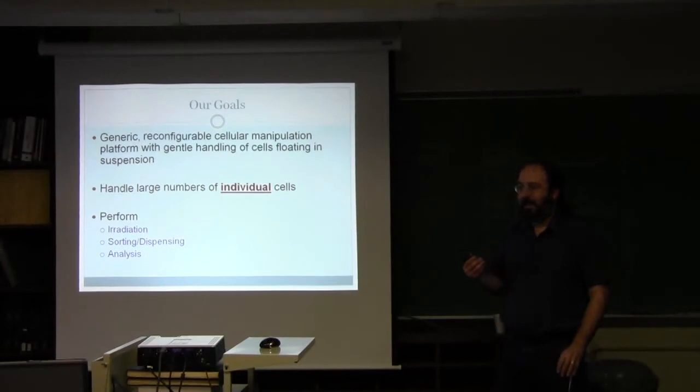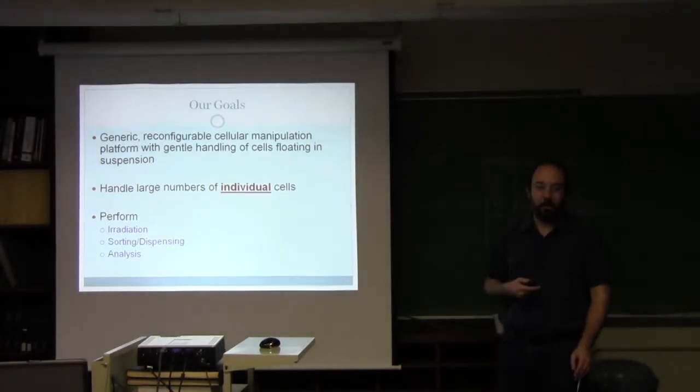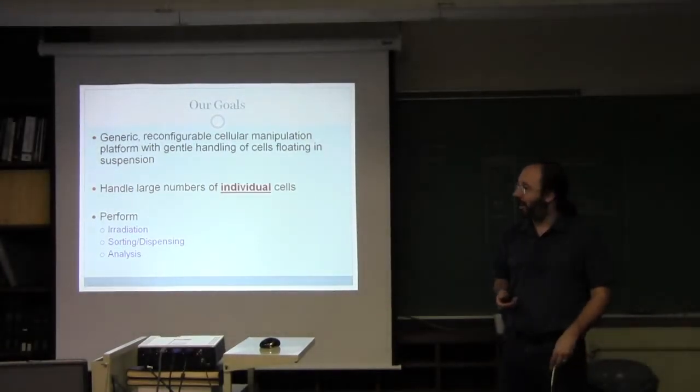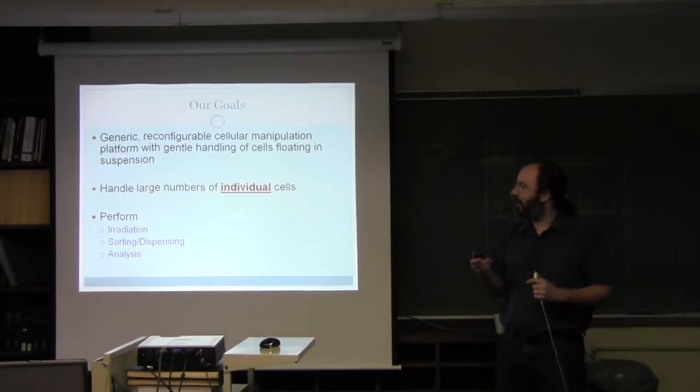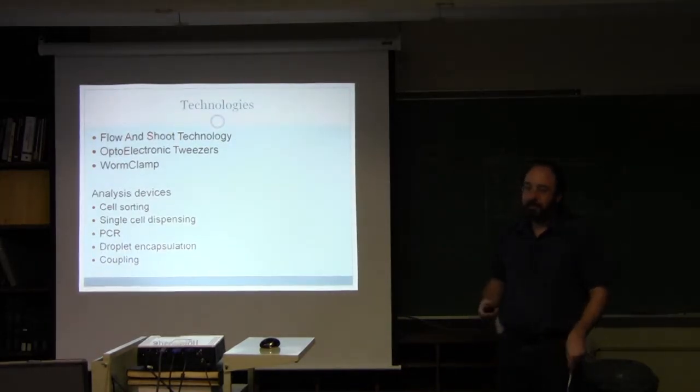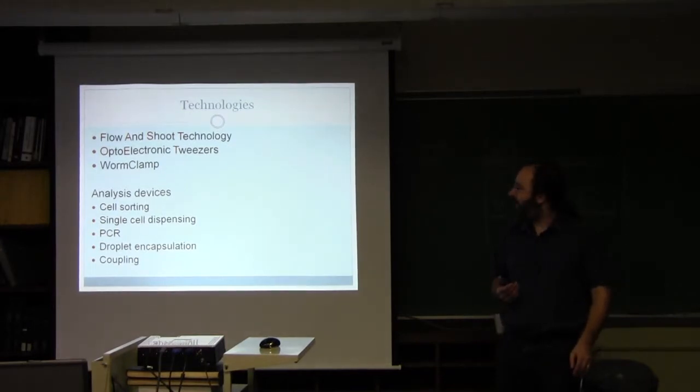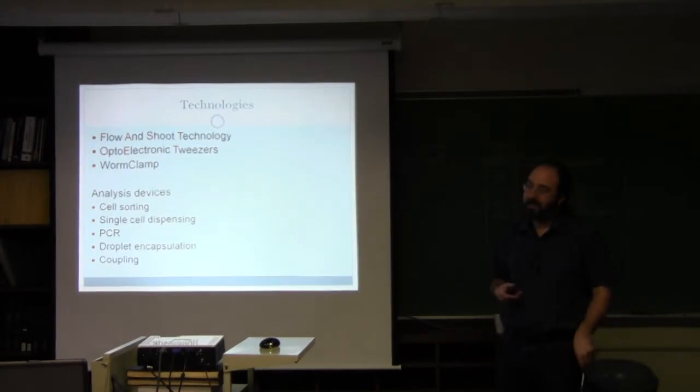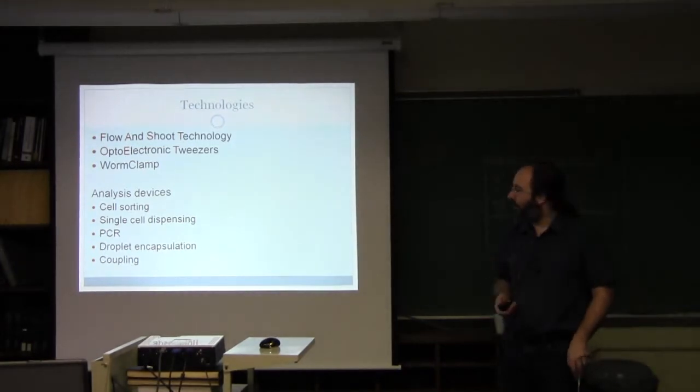This is a step forward from the amoeba system that Alan was talking about, which aims at doing a lot of this stuff on a more macroscopic scale. I'll be talking about three irradiation platforms that we're developing: the flow-and-shoot system, the optoelectronic tweezers, and the worm clamp, and then touch a little bit about the analysis devices that we're looking at for analyzing the cells after irradiation.